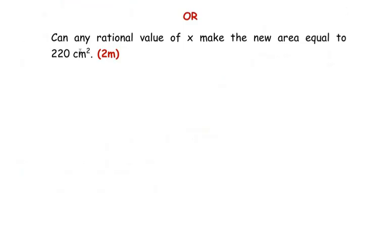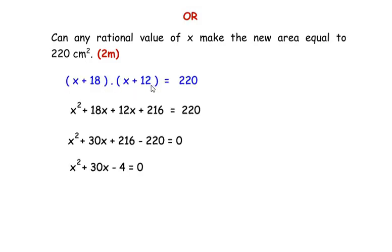Now the OR question: can any rational value of x make the new area equal to 220 cm²? The new area is (x + 18)(x + 12) = 220. Expanding: x² + 18x + 12x + 216 = 220. Bringing 220 to the left: x² + 30x + 216 − 220 = 0, which simplifies to x² + 30x − 4 = 0.